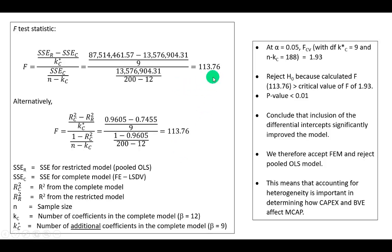And in this analysis, the answer is yes, because as you can see, F-statistic significantly exceeds the critical value of F, which is only 1.93. So P-value is very much below the 1% level of significance, and we can conclude that the inclusion of the differential intercepts significantly improved the model.